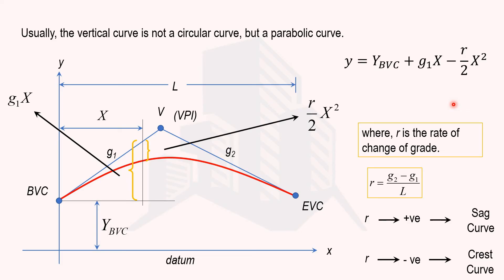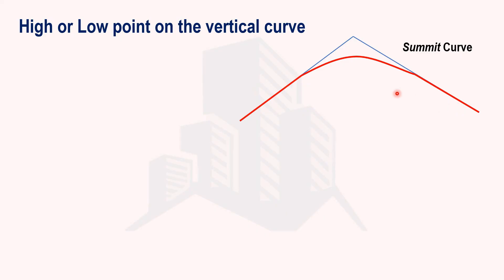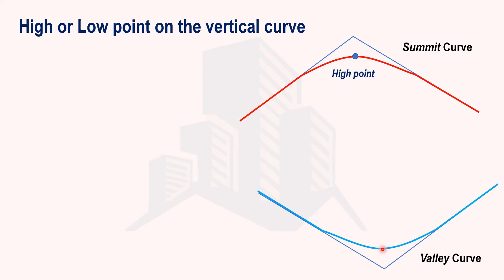The next topic is the high point and low point on a vertical curve. We need these high and low points to investigate drainage conditions, determine clearance beneath overhead structures, or check clearance over underground pipes or side distances. For a summit curve, knowing the high point helps determine clearance distance for overhead bridges or safe sight distances. For a valley curve, knowing the lowest point is necessary for drainage facilities or clearance over underground pipes.